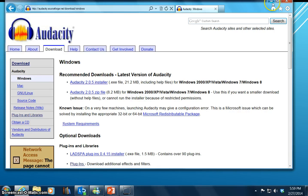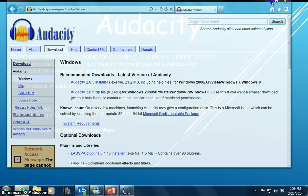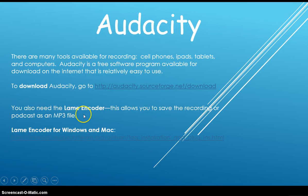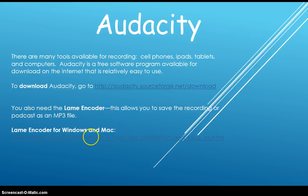The next part that I think you need for Audacity is the Lame Encoder. This allows you to save the recording or podcast as an MP3 file, and that just really helps — it makes the recording easy to play back on a multitude of devices so more people can hear it.